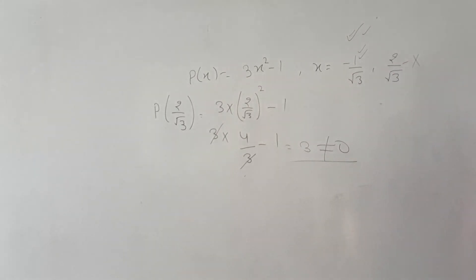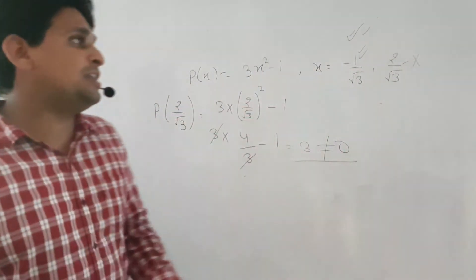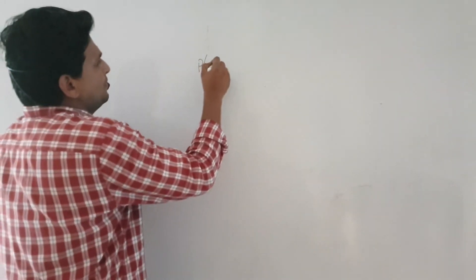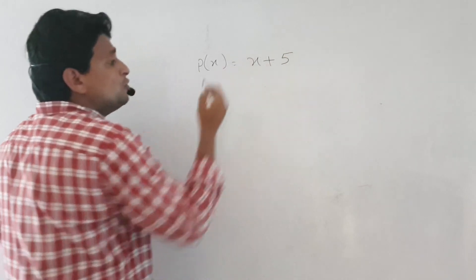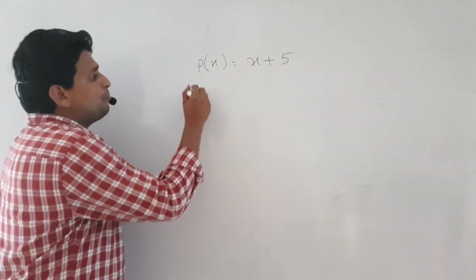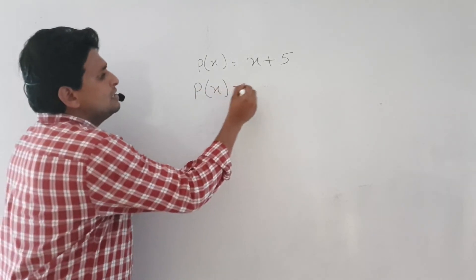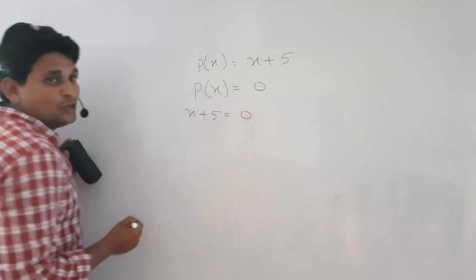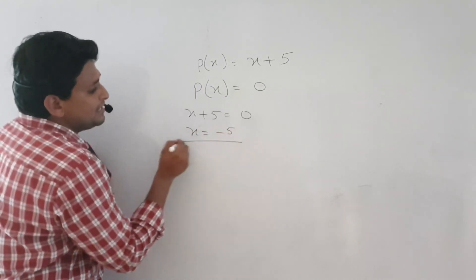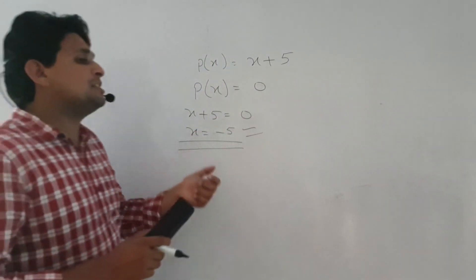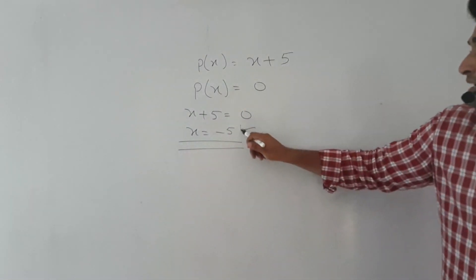Question number 5, first part: p(x) equals x plus 5. You have to find the zero — that is, what value of x makes the polynomial equal to 0. Set p(x) equal to 0: x plus 5 equals 0, so x equals minus 5. That means the zero of the polynomial is x equal to minus 5.